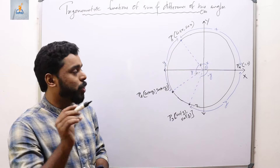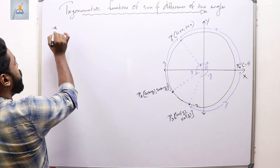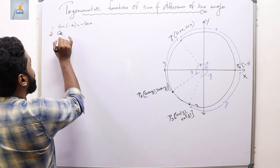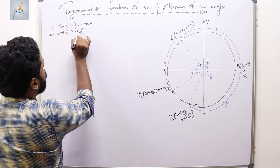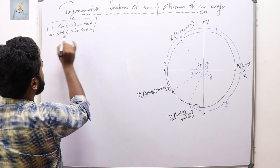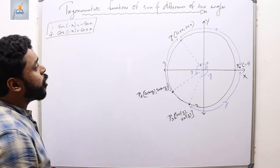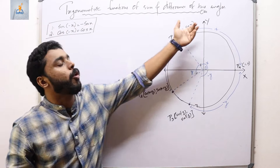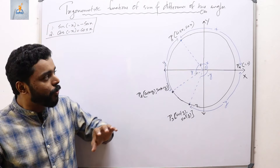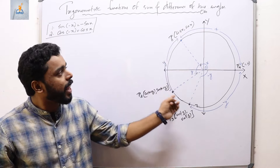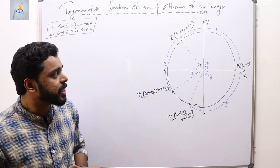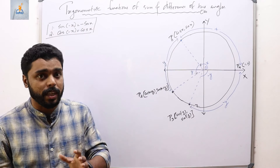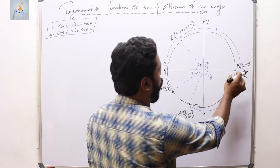Now we shall define the first trigonometric identity using a unit circle. Before that, from the previous class we learned that sin(−x) = −sin(x) and cos(−x) = cos(x). These two identities will be used to derive a new identity for the sum of two angles. The unit circle here has radius one unit.